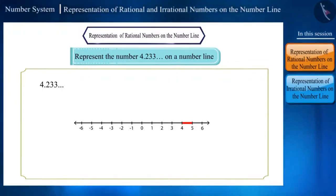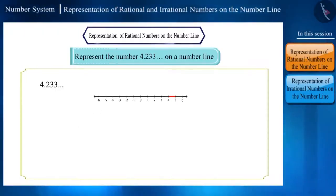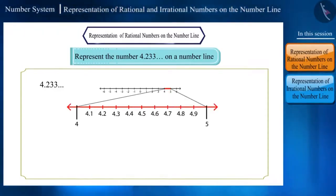This is a large range, so locating the number at the right position would be difficult. So let us divide this range into 10 equal parts. Now this number would lie between the numbers 4.2 and 4.3.